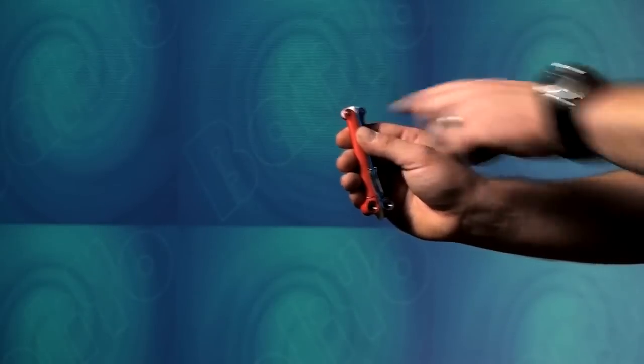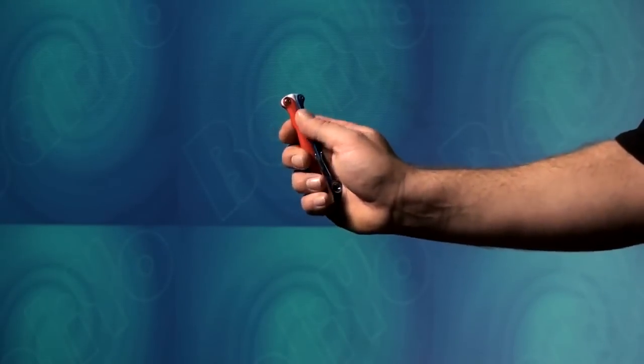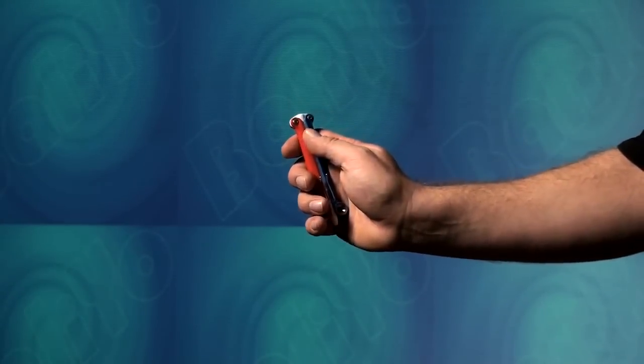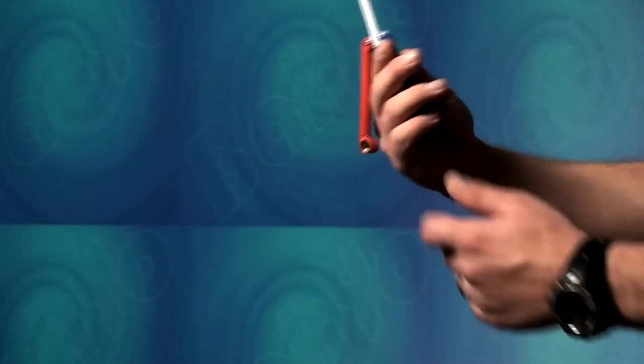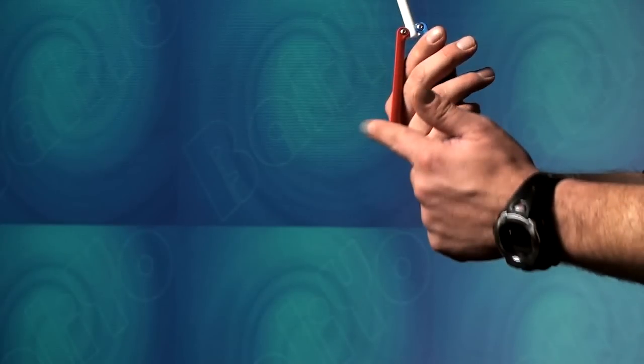Start with the closed Balisong gripped in your hand with the pivot pin end of the handles facing upward. Loosen your grip on the handle away from your palm, here the red one, and swing it up until it hits the back of your hand.